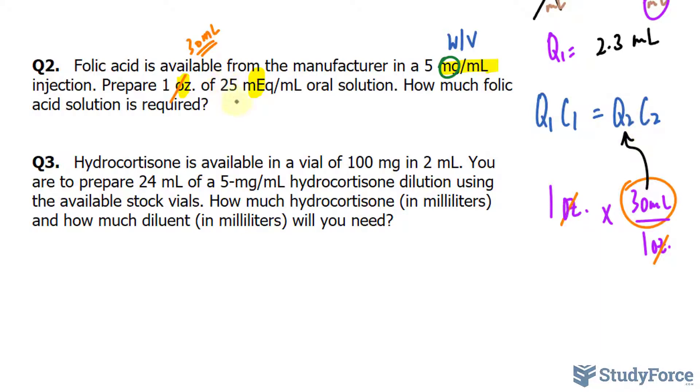Now here we have a concentration that is in mEq per milliliter and the manufacturer has it rated as mg per milliliter. You have one of two options. Either you make 5 milligrams per milliliter into milliequivalents per milliliter so that it matches the units here, or convert milliequivalents per milliliter into milligrams per milliliter.